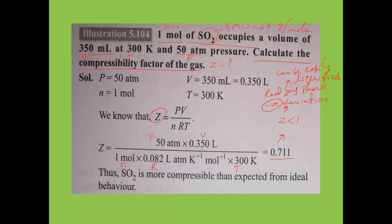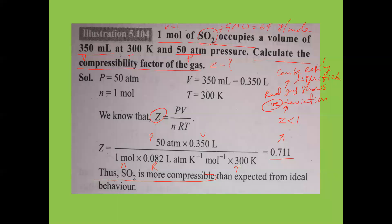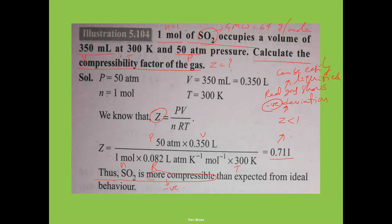When Z < 1, the a value will be greater, meaning attractive forces between gas molecules are greater. A is the measure of attractive forces. Therefore, SO2 is more compressible — it shows negative deviation, indicating it can be compressed more easily than expected from ideal behavior and can be easily liquefied.